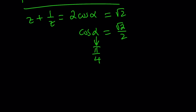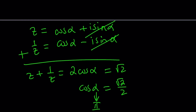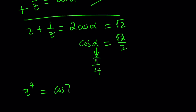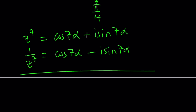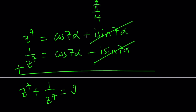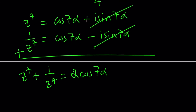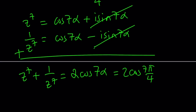To find z to the 7th, since z equals cosine alpha plus i sine alpha, De Moivre's formula gives z to the 7th equals cosine 7 alpha plus i sine 7 alpha, and 1 over z to the 7th equals cosine 7 alpha minus i sine 7 alpha. Adding them, the imaginary parts cancel and z to the 7th plus 1 over z to the 7th equals 2 cosine 7 alpha. With alpha equals pi over 4, this is 2 cosine 7 pi over 4. Cosine of 7 pi over 4 equals cosine of pi over 4, so the answer is 2 times root 2 over 2, which equals square root of 2.